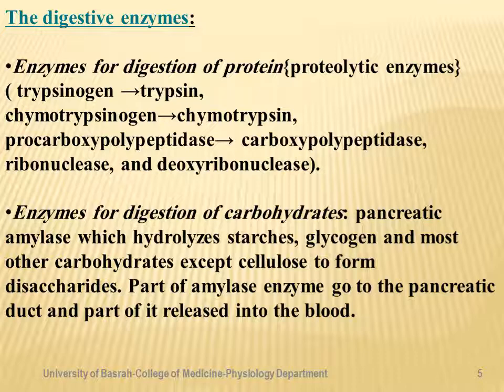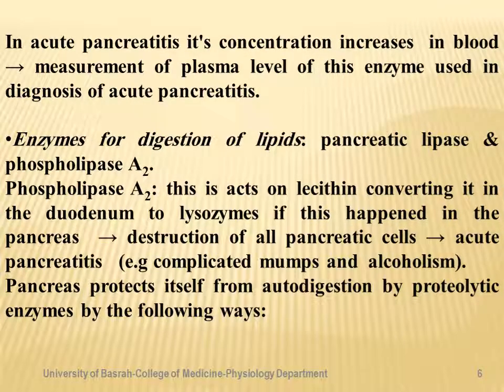Enzymes responsible for digestion of carbohydrates include pancreatic amylase, which hydrolyzes starch, glycogen, and most other carbohydrates except cellulose, forming disaccharides. Part of the pancreatic amylase goes into the pancreatic duct and part of it is released directly into the blood. In acute pancreatitis, the concentration of pancreatic amylase increases in the blood, and measurement of the plasma level of this enzyme is used in the diagnosis of acute pancreatitis.